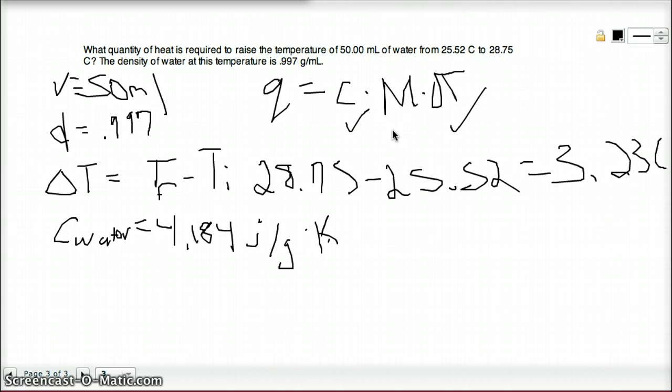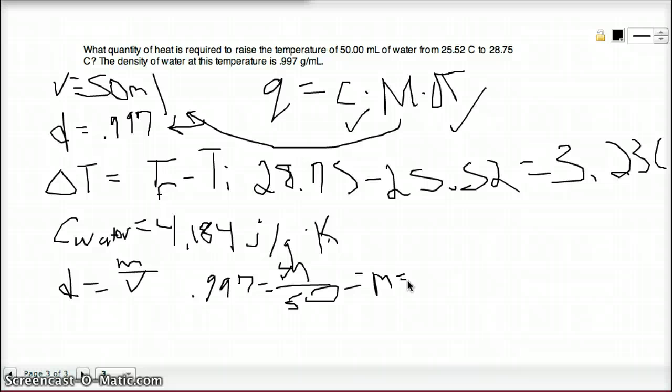We just need M. And we should be able to use these two pieces of information to find M. If we know that density equals mass divided by volume, so if our density is 0.997 grams per milliliter and that equals our mass divided by 50, then M is equal to 0.997 times 50, which is 49.85 grams.